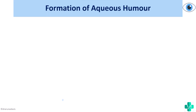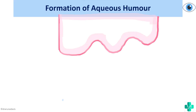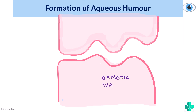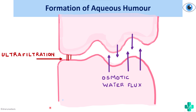Aqueous humor is formed in the ciliary processes and this occurs mainly by three mechanisms. The first mechanism is the osmotic water flux, wherein water movement occurs due to osmosis. Passive processes like diffusion also play an important role, because it is by diffusion that molecules such as oxygen and carbon dioxide are diffused into the surrounding fluid.